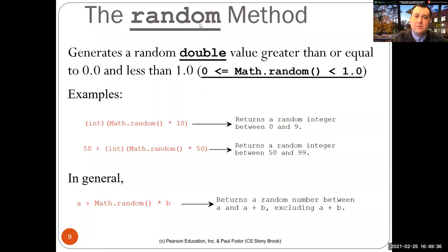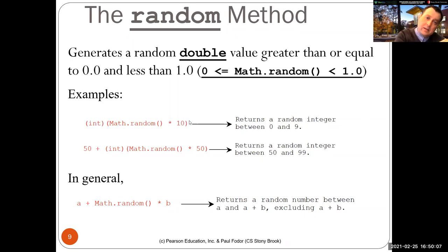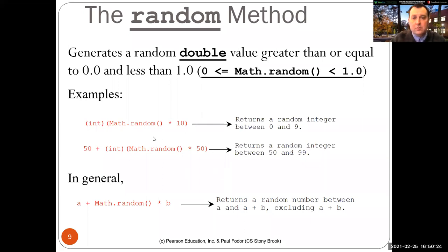Math.random gives a value between zero (inclusive) and one (exclusive). You can multiply it by 10 to get a value between zero and ten. Cast it to an integer and you get integers between zero and nine — not ten, because math.random never equals one, so the value is always less than ten. In general, to get a value between a and a+b (excluding a+b), you add a to math.random multiplied by b.